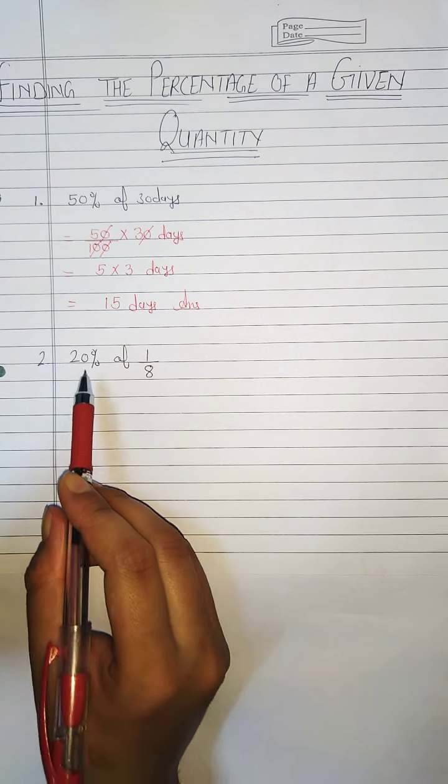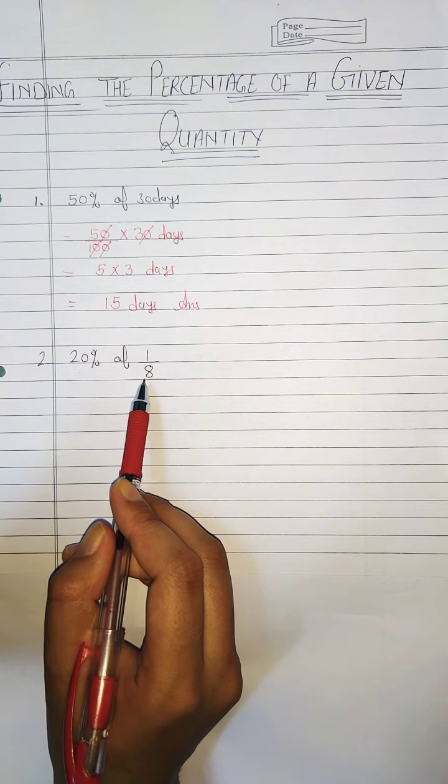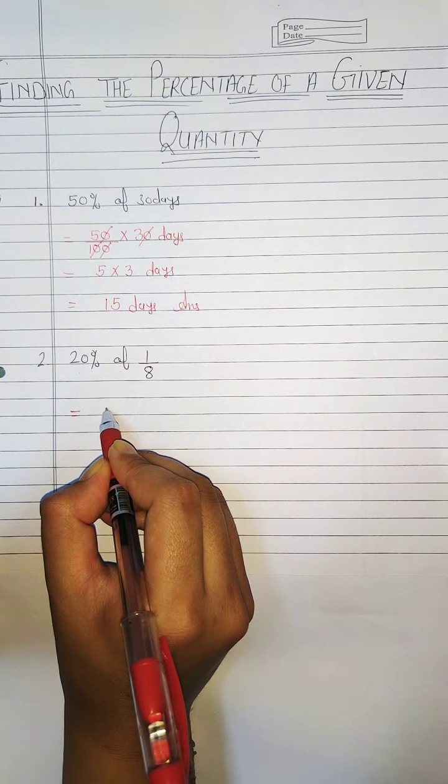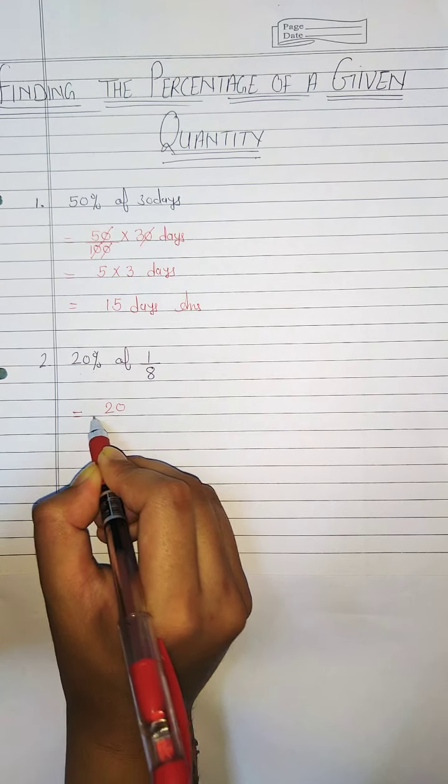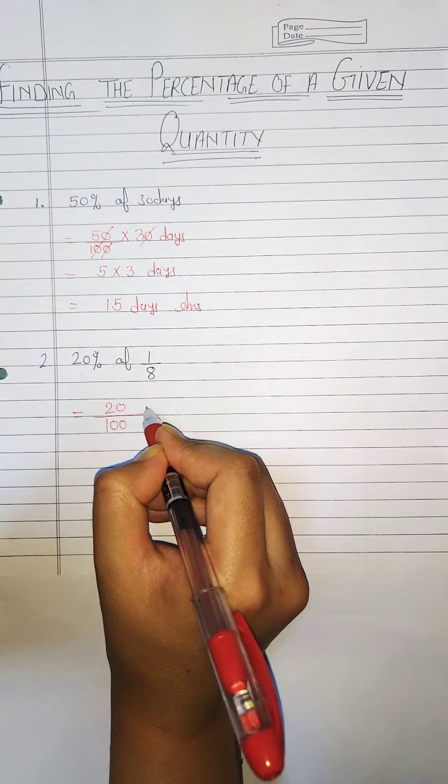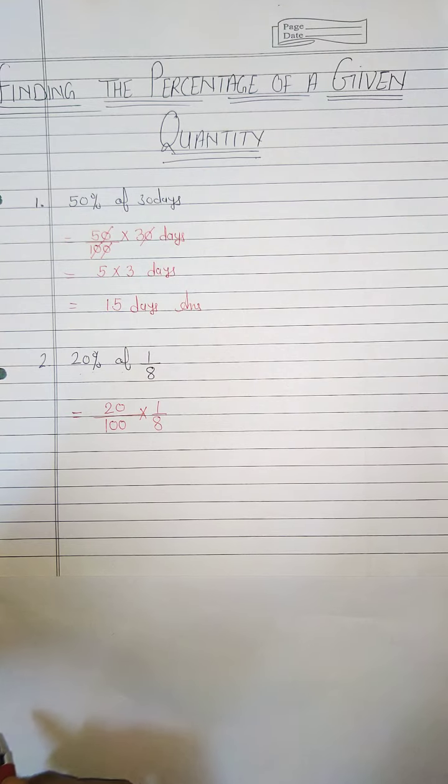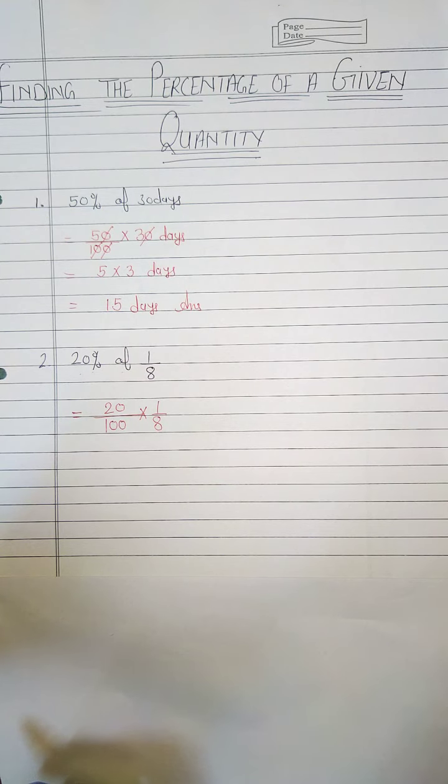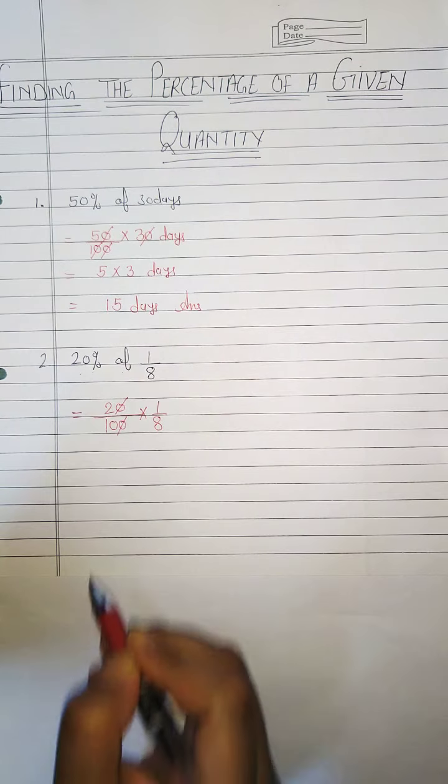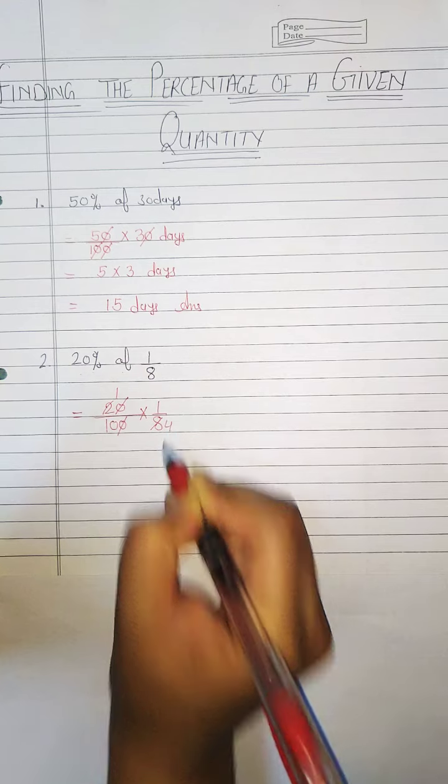Now example 2. Find 20% of 1 by 8. So first we will write 20%, 20 over 100. Of means multiply. Now we have 1 by 8. Now we will do cancellation. This zero to this zero. Now 2 1s are 2 and 2 4s are 8.